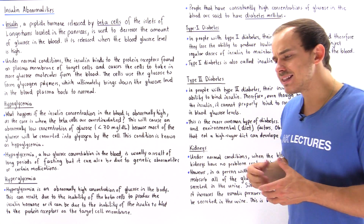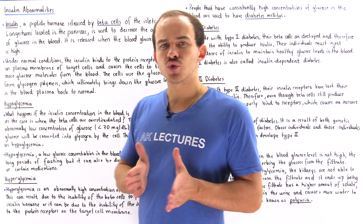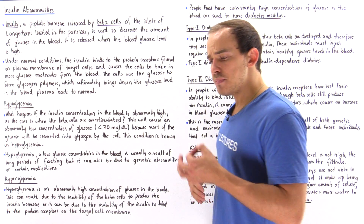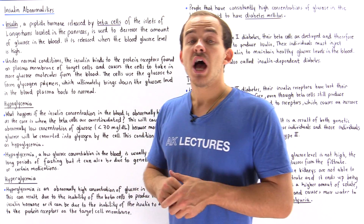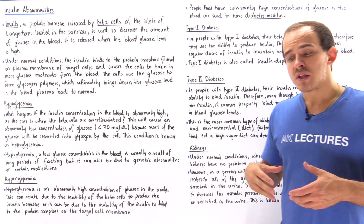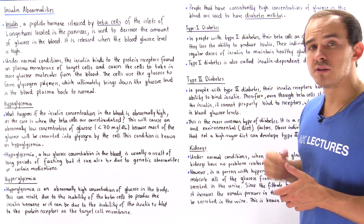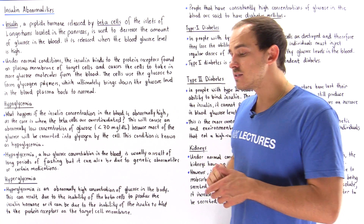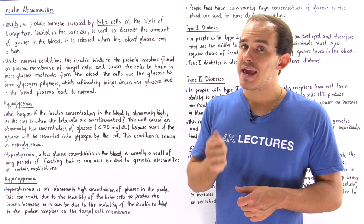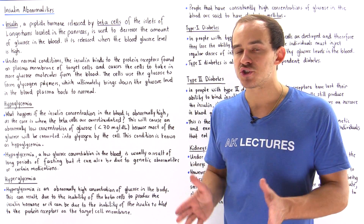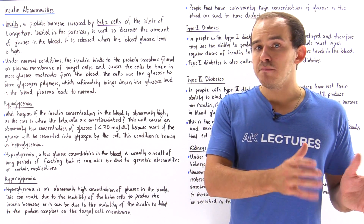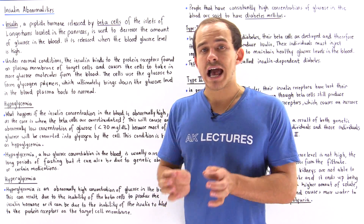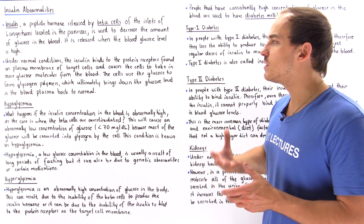The mechanism by which insulin controls glucose works as follows: because insulin is a peptide hormone, it binds onto the membrane of target cells. The receptor proteins for insulin are found on the plasma membrane of target cells such as liver cells or muscle cells. Once insulin binds onto the membrane, it makes the membrane more permeable to glucose, allowing glucose to travel from the blood plasma into the cytoplasm of the cell.